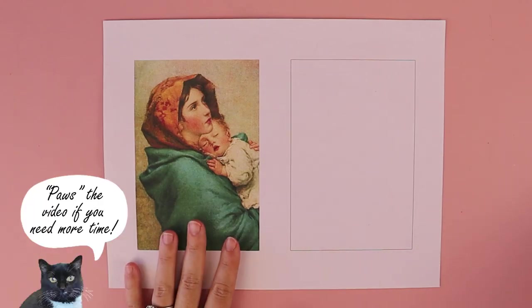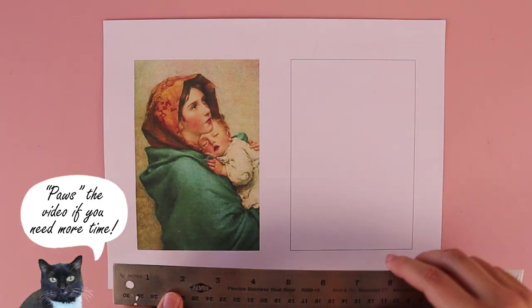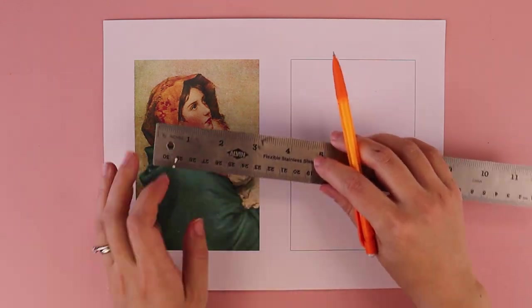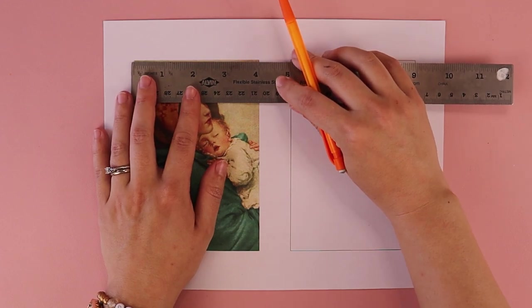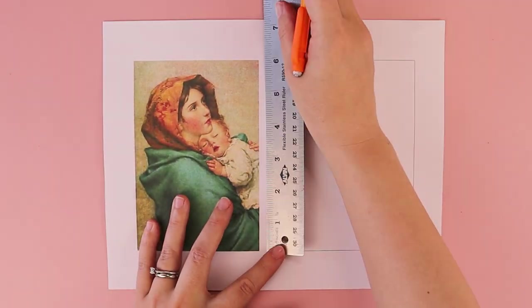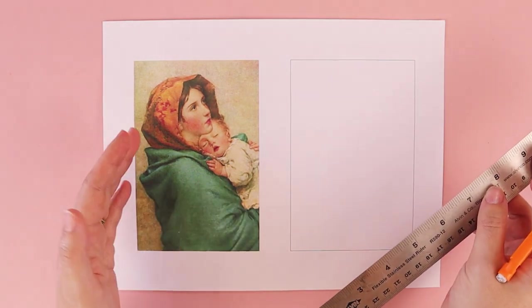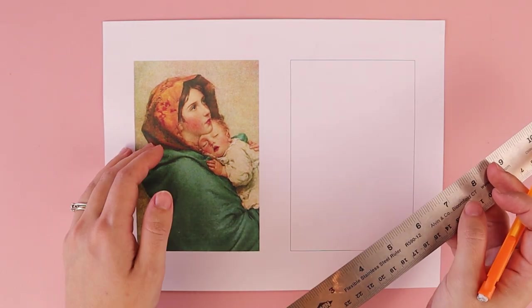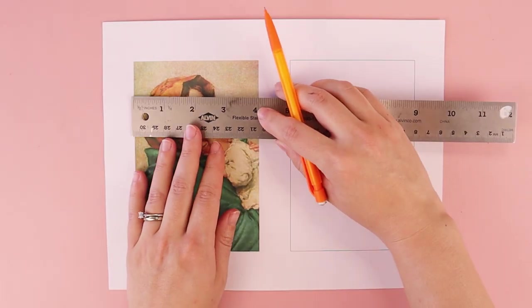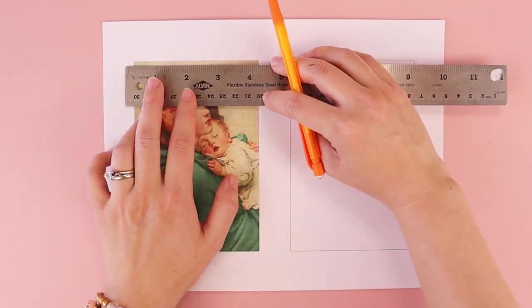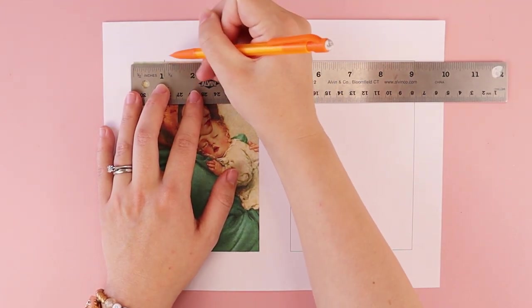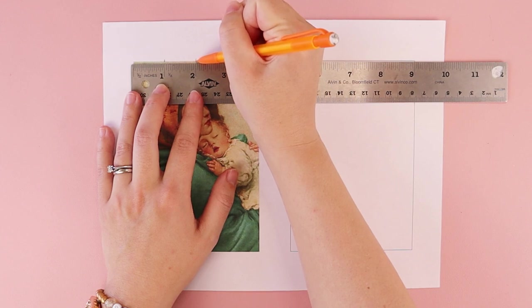So the first thing that we're going to do is draw grid lines on our reference picture. So I have my ruler and I have a pencil. This image is four by six inches. You can break down a grid into any unit of measurement, but for this practice, I'm going to break it down into one inch squares. So I'm going to hold my ruler up against the picture and I'm going to mark lines on every inch line.